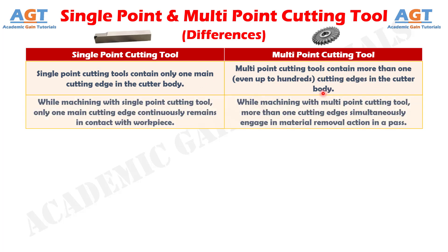Number 2: While machining with single point cutting tool, only one main cutting edge continuously remains in contact with the workpiece, whereas while machining with multi point cutting tool, more than one cutting edges simultaneously engage in material removal action in a pass.